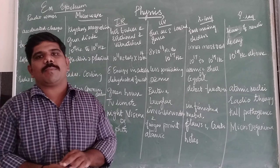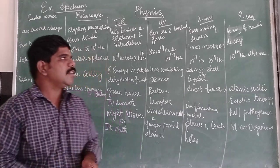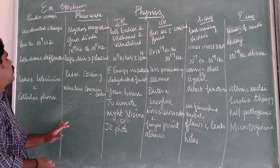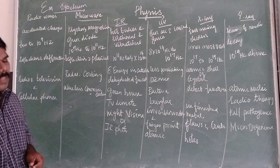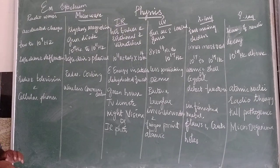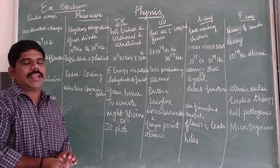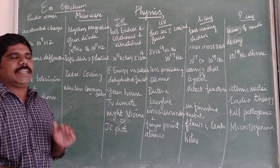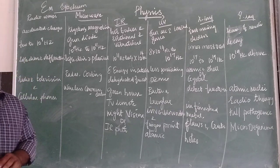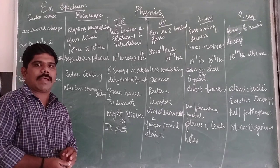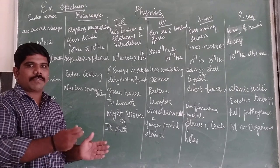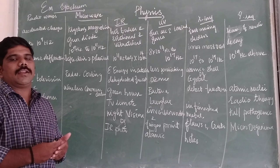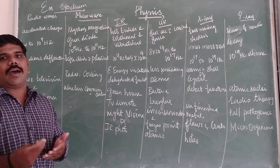Now let's look at the electromagnetic spectrum. The electromagnetic spectrum is the orderly distribution of electromagnetic waves in terms of their frequency level.